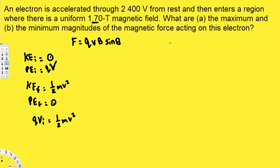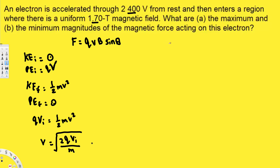If we rearrange this equation, we can find the velocity, because we know the charge of the electron, the voltage is provided (2400 V), and the mass of the electron is 9.11×10⁻³¹ kg. Rearranging gives v = √(2qV/m). Let's plug in the values: two times the electron charge, which is negative 1.6×10⁻¹⁹, times the potential of 2400 volts.